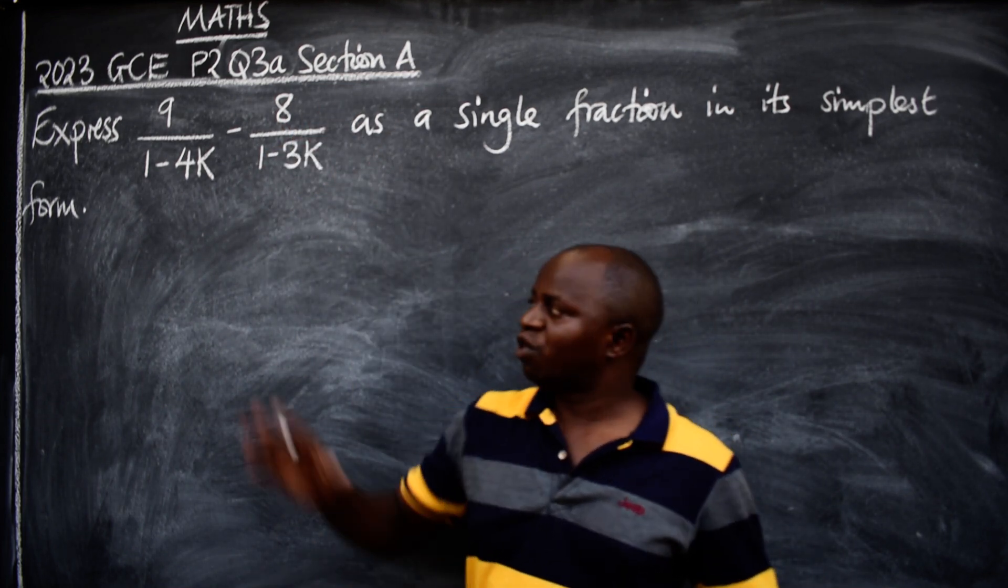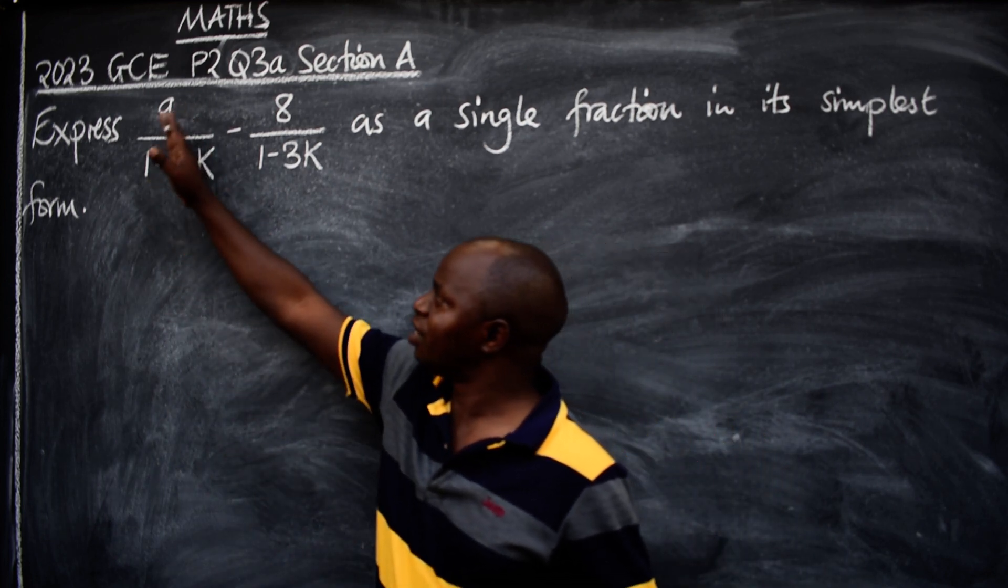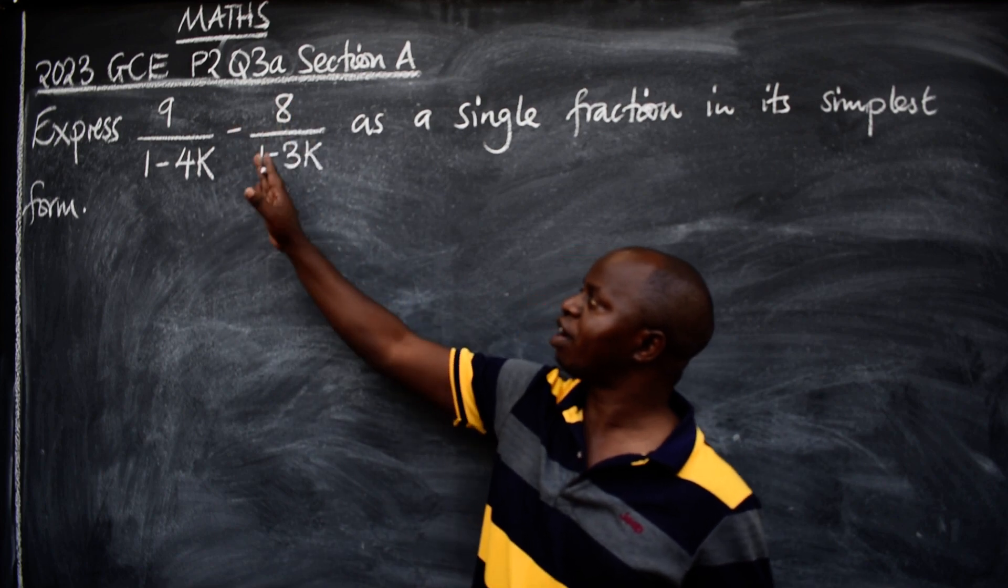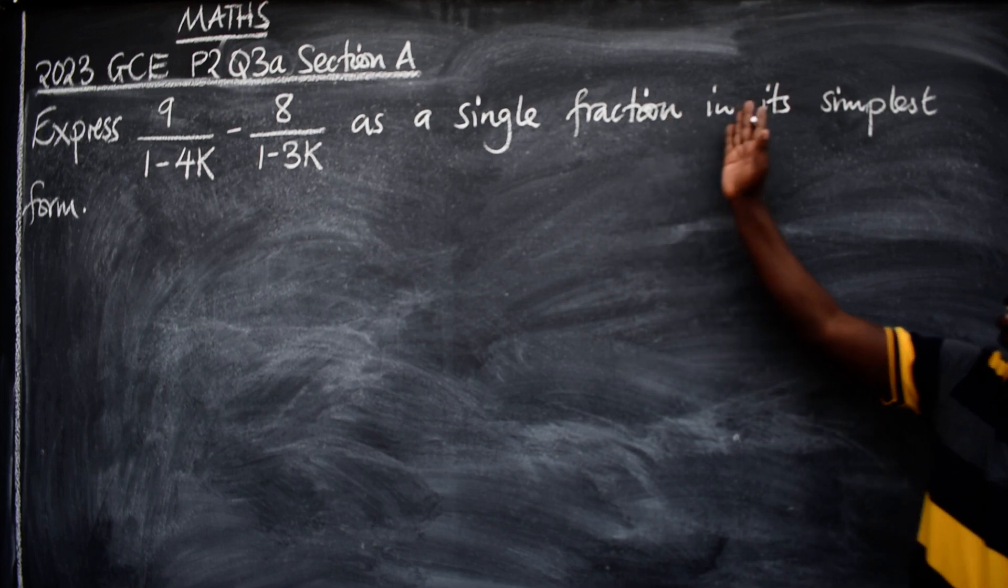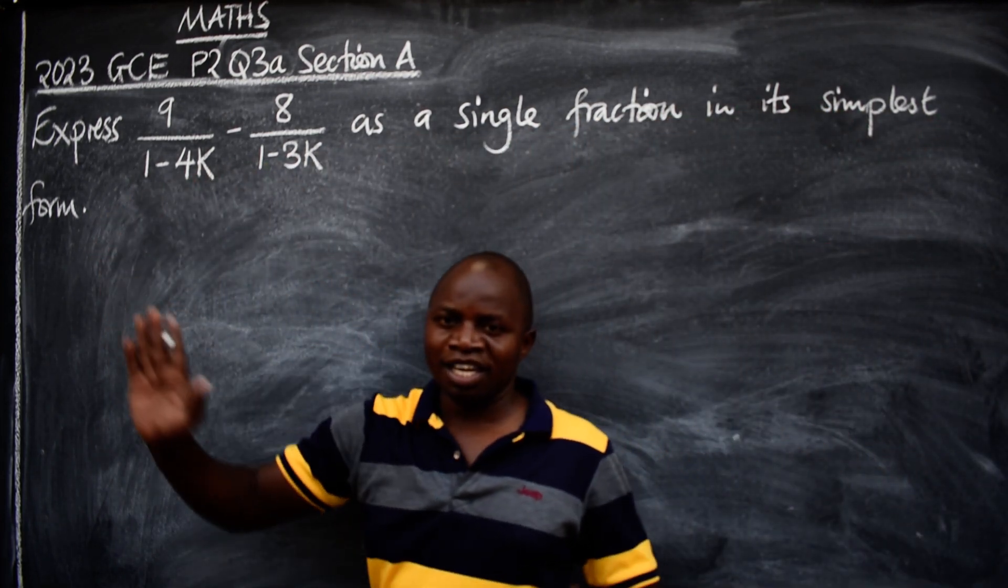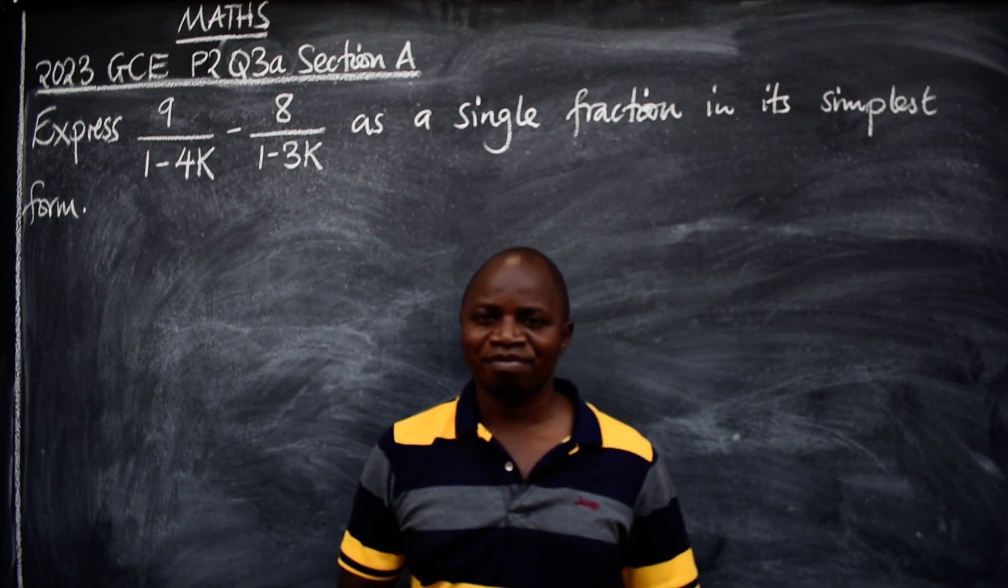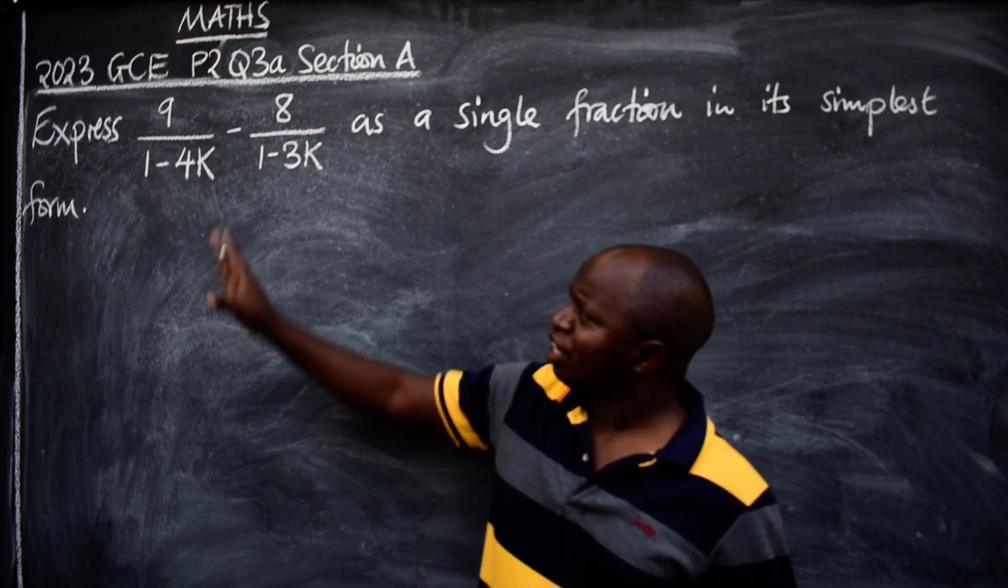Let's go straight into the question: express 9 over 1 minus 4k minus 8 over 1 minus 3k as a single fraction in its simplest form. Let's identify the topic from which the question is coming from - algebra, correct.